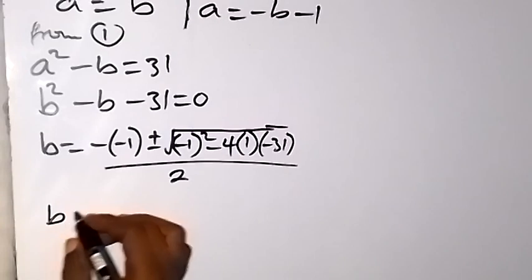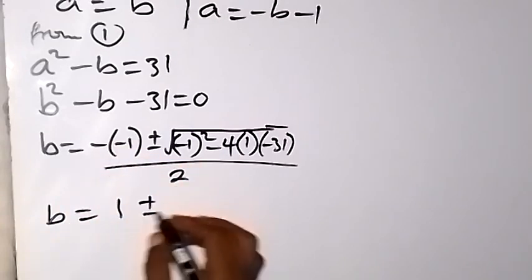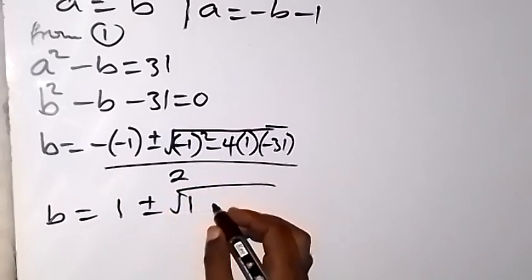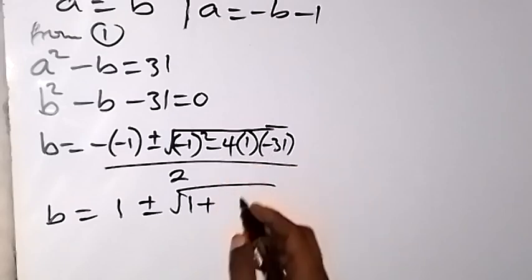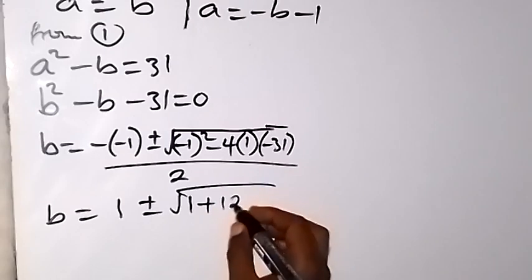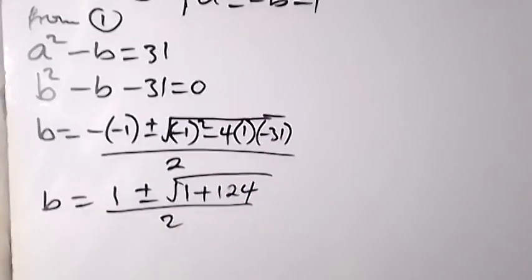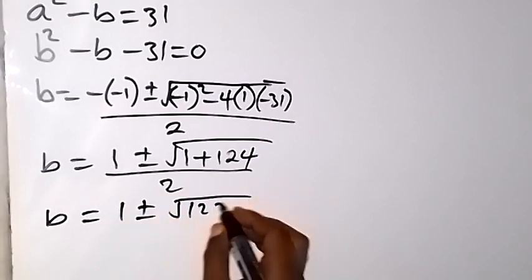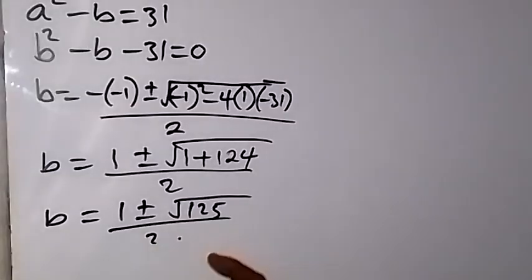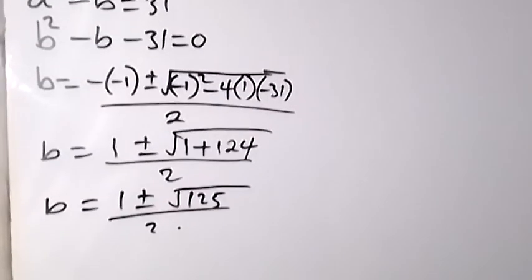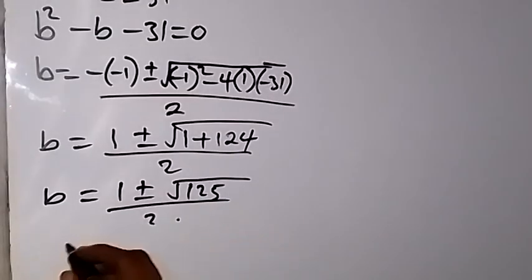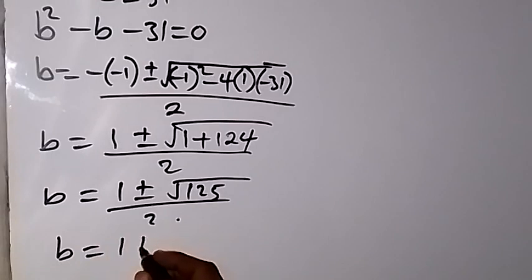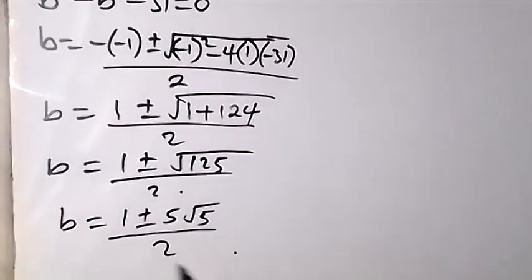This simplifies to b equals 1 plus or minus the square root of 1 plus 124, which is the square root of 125, all over 2. Since 125 equals 25 times 5, the square root of 125 is 5√5. So b equals (1 ± 5√5) / 2.